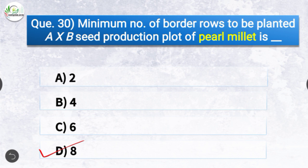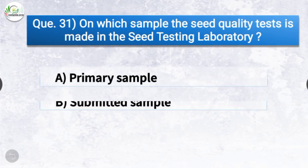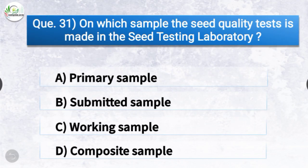Question number thirty-one: On which sample is the seed quality test conducted in the seed testing laboratory? The options are primary sample, submitted sample, working sample, or composite sample. The correct answer is option C — working sample. The seed quality test is made on the working sample in the seed testing laboratory.